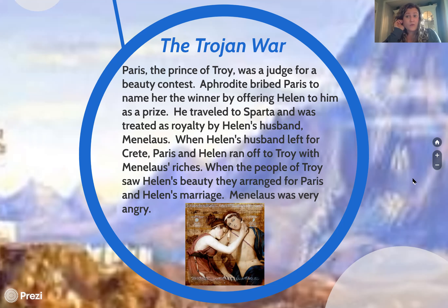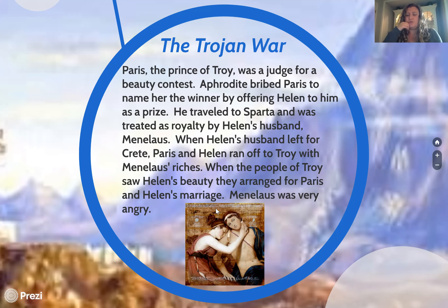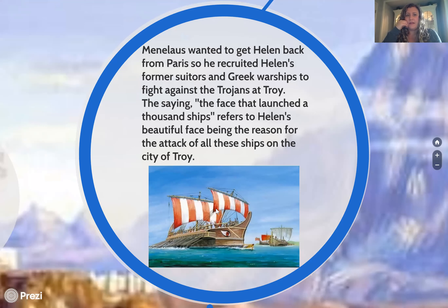Helen runs off with Paris because Aphrodite promised her — a promise she didn't even need to make. Menelaus is upset and marches toward Troy to get Helen back. He recruits all of Helen's former suitors and takes them to Troy with him. It is the reason that those ships go and attack the city of Troy where Paris and Helen are now living.